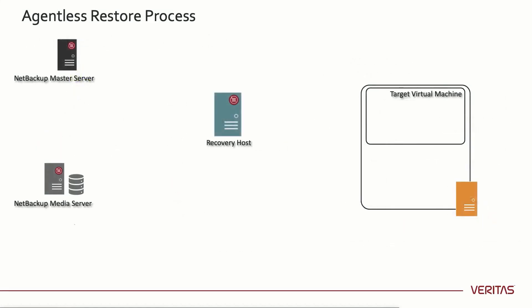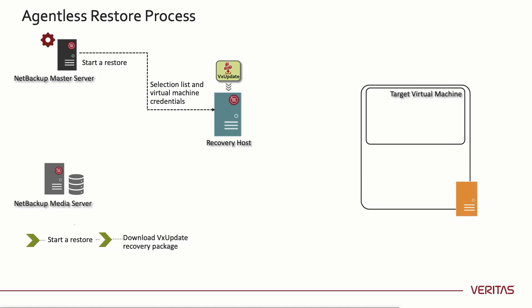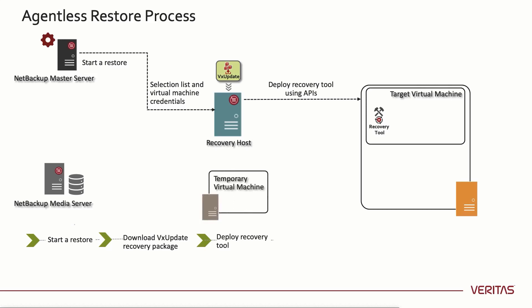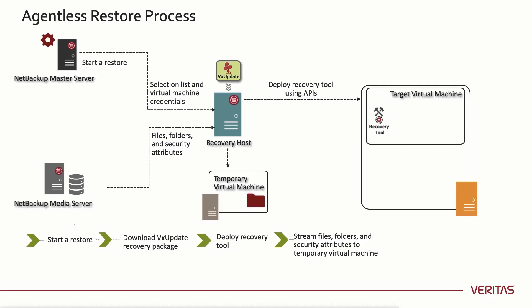Now let's look at the agentless restore process and see how it works. When a restore is initiated from NetBackup web UI, the NetBackup master server sends the selection list and target virtual machine credentials for restore to the recovery host. The recovery host confirms that it has the necessary VxUpdate recovery package to perform the restore. If the package is not available, the recovery host downloads the required package from the master server using VxUpdate. The recovery host extracts the recovery tool from the package and deploys it to the target virtual machine using the vSphere management APIs. NetBackup creates a temporary virtual machine for agentless restore. The data stream containing the user-selected files, folders, and security attributes is sent from the NetBackup media server to the temporary virtual machine via the recovery host.